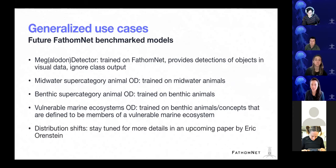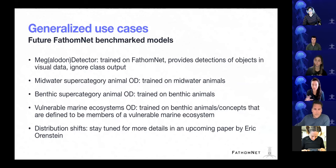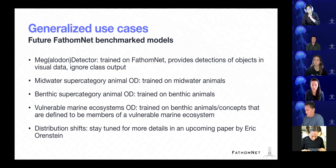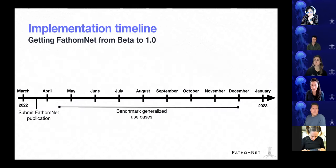The last item is distribution shifts — something that Eric Orenstein, one of our team members, is spending a lot of time thinking about and will be submitting a paper on shortly. The idea is that if you train an algorithm and then deploy it in a different place, with a different camera, at a different time, or under slightly different conditions, that model doesn't perform very well. This is a known problem in the computer vision community, and Eric is going to present FathomNet as a rich source of distribution shifts as an important use case for that community.